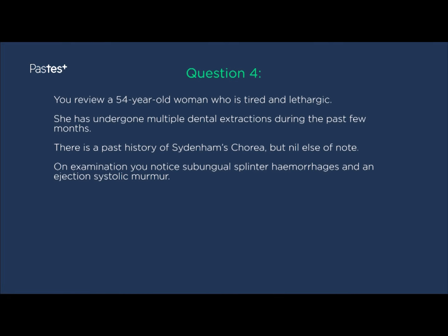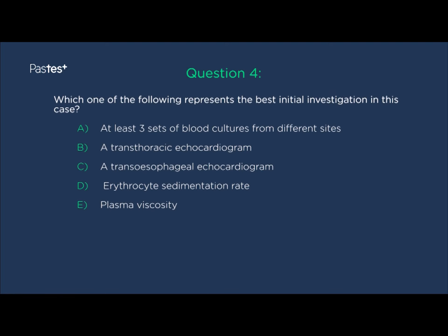Question four. You review a 54-year-old woman who is tired and lethargic. She has undergone multiple dental extractions during the past few months. There is a past history of Sydenham's chorea, but nothing else of note. On examination, you notice sub-ungual splinter haemorrhages and an ejection systolic murmur. Which of the following represents the best initial investigation in this case? If you went for A — at least three sets of blood cultures from different sites — you'd be correct.